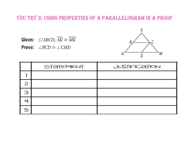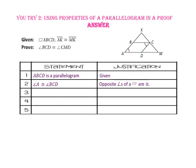Pause the video and do You Try number 2. Here we want to prove that angle BCD is congruent to angle CMD. Starting with the given that quadrilateral ABCD is a parallelogram, since opposite angles of parallelograms are congruent, angle A and angle BCD are congruent. Using the second given that segment AK is congruent to segment MK, triangle AKM is isosceles, which means angle A and angle M are congruent. By the transitive property of congruence, angle BCD is congruent to angle CMD.